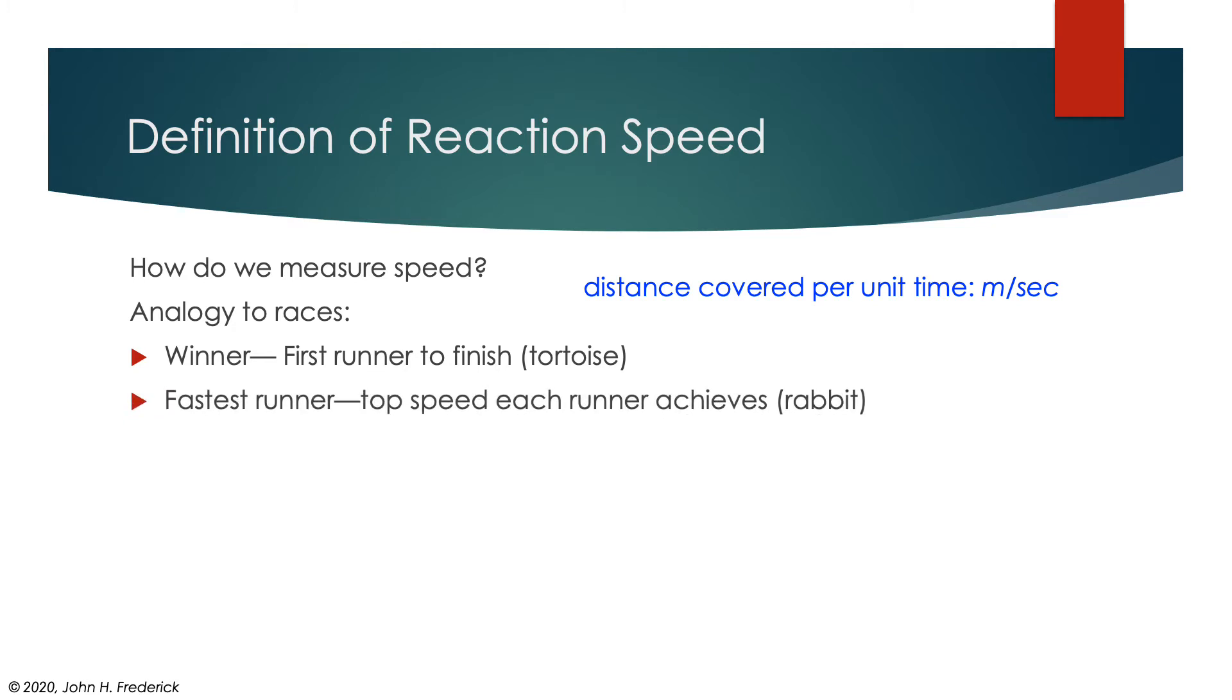But we might also think about characterizing the fastest runner as the one that reaches the maximum velocity, or the top velocity during the course of the race. So if we were to look at the tortoise and the hare, and the tortoise won the race because it was the first to cross the finish line, but I think most people would agree the rabbit was the faster runner. So depending on how you want to define speed, you might choose one or the other as the actual fastest one.